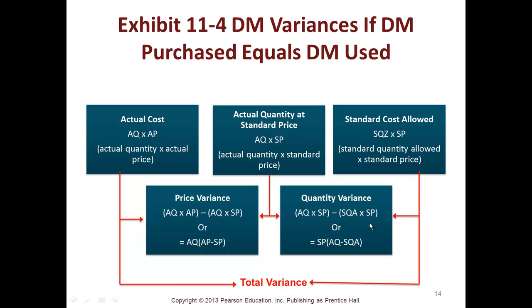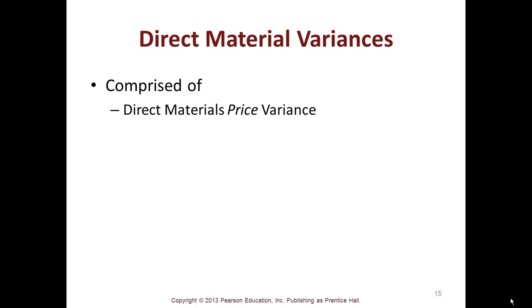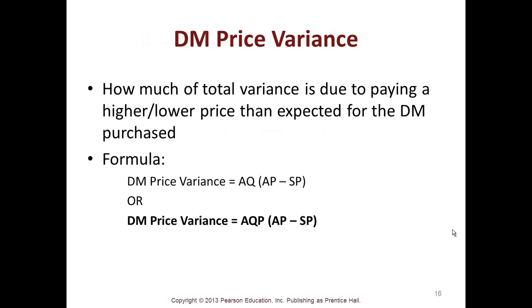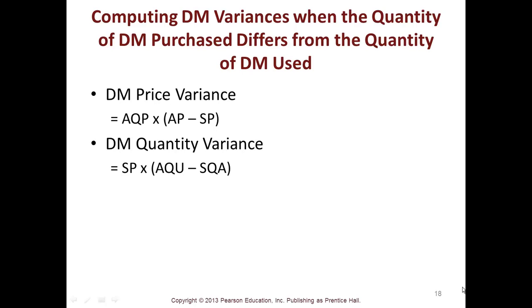Your total variance is made up of a quantity piece and a price piece. The direct material price variance formula is: actual quantity times (actual price minus standard price). The direct material quantity variance formula is: standard price times (actual quantity minus standard quantity allowed). When the quantity of direct materials purchased differs from the quantity used, you get both variances, which complicates the analysis.